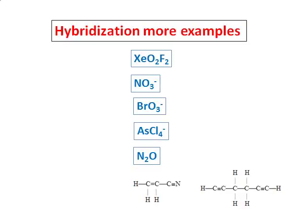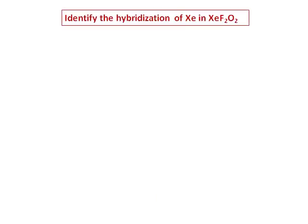This video has more examples on hybridization. We are not going to go into much detail — the molecule and its Lewis structure will be given, and we will determine the hybridization, geometry, and polarity. We are doing this for the molecule XCF2O2. The first thing we will do is draw the Lewis structure.